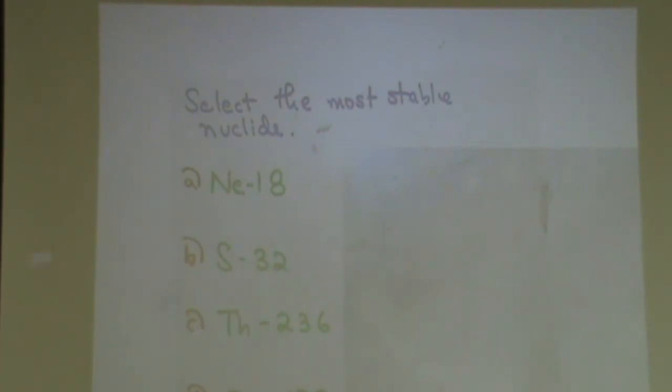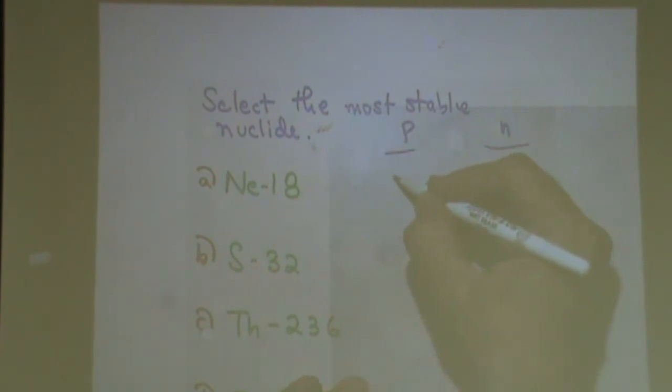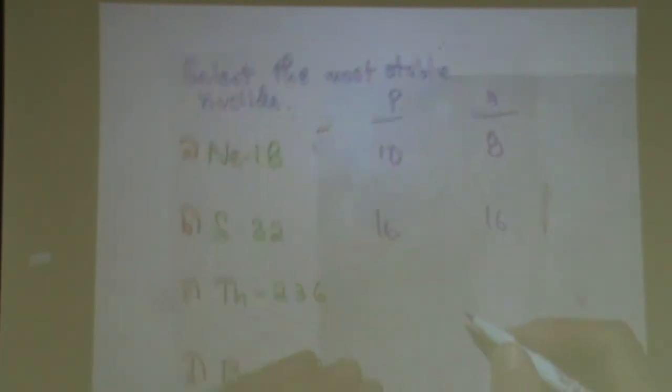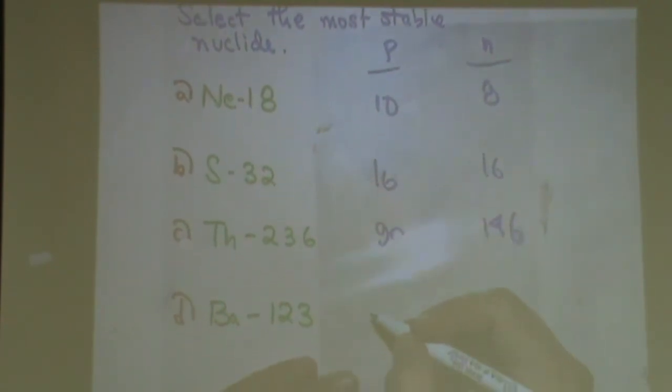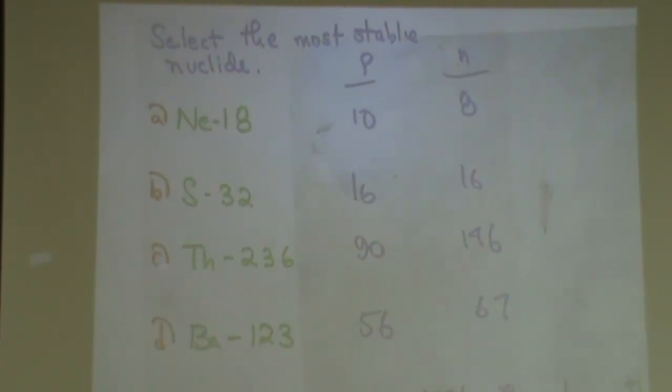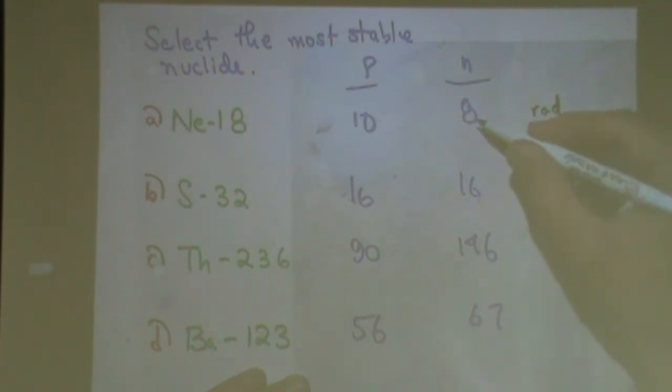In this other example, you can help me out here, protons, neutrons. Was it 10 protons and then 8? What's sulfur? 16 and 16? Thorium? 90 and 146. And then barium? 56 and 67. So let's try these. What do we think of neon? Radioactive or stable? Probably radioactive because protons don't equal neutrons.